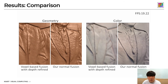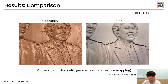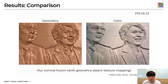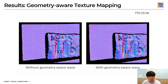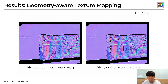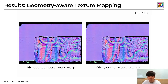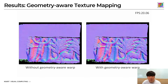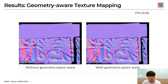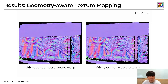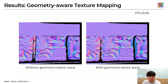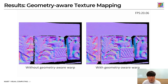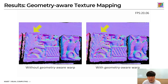Our NOMAS Fusion achieves high-resolution geometry and color texture results thanks to geometry-aware texture mapping. This video shows the impact of our geometry-aware texture mapping. Without our geometry-aware warp, we can see that normals textures are erroneously registered off the edge of the geometry. As this error accumulates, the texture becomes blurry as indicated by the yellow arrow.